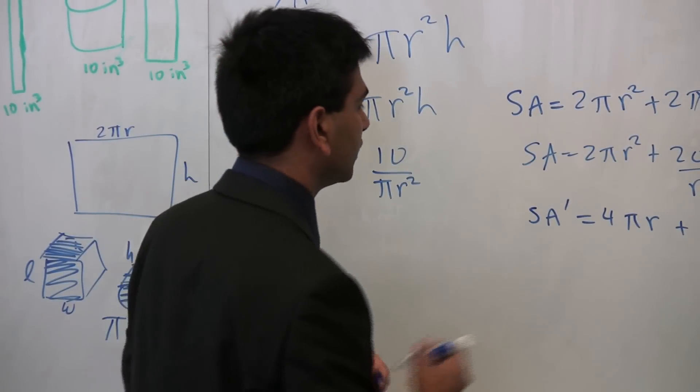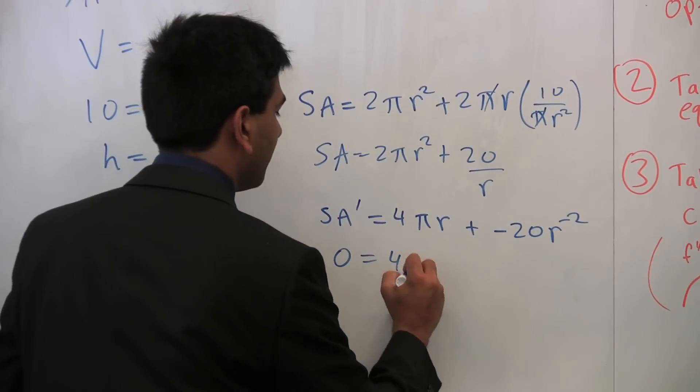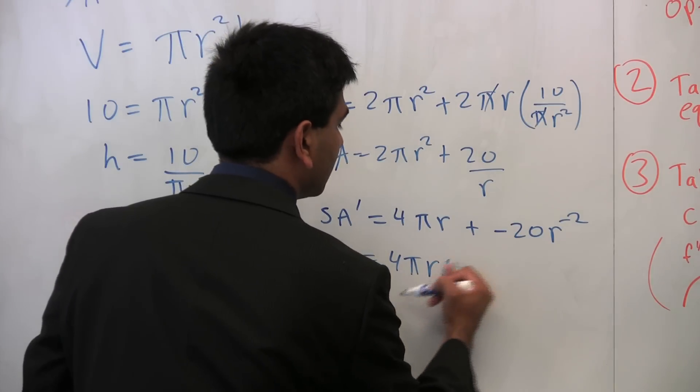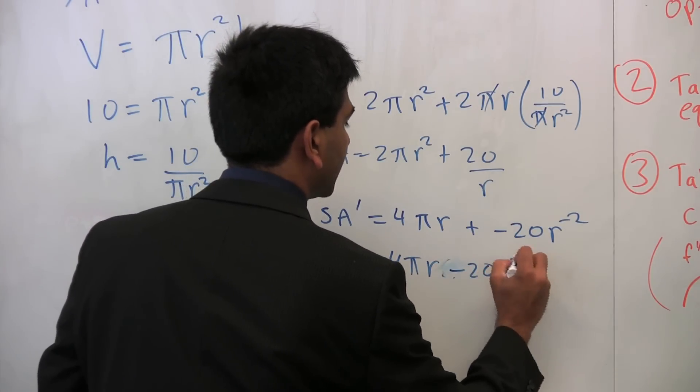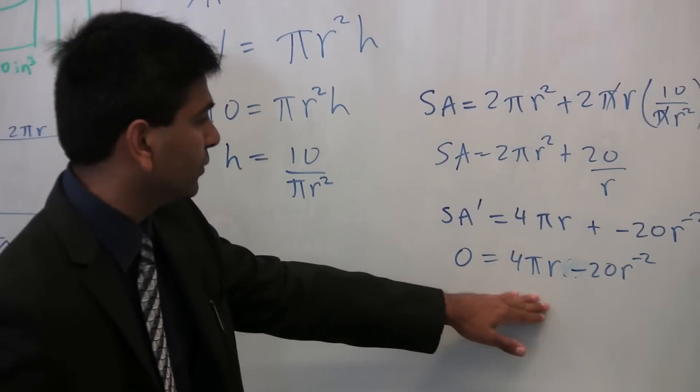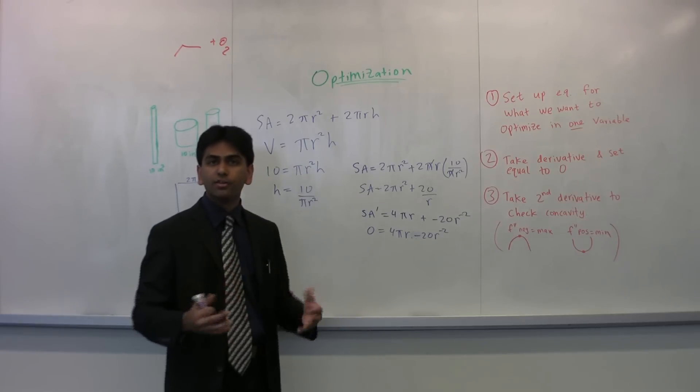So keeping this in mind, we have to set this equal to zero. So zero equals 4 pi r plus, well really minus, minus 20 r to the negative 2. So now we can actually, as you can see, it's just algebra, we can solve for r.